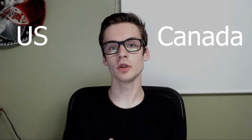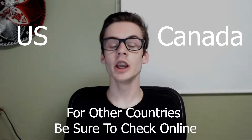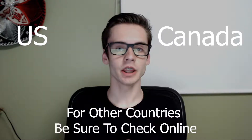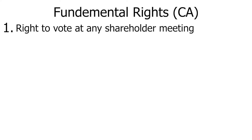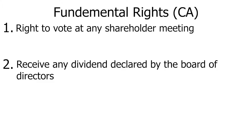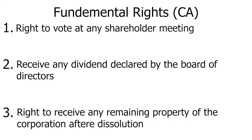Now I will be talking specifically about the fundamental shareholder rights in Canada and the US here. So if you happen to be in a different country, you can look it up online, though worldwide they tend to be more or less the same. In Canada, shareholders have three fundamental rights. First, you have the right to vote at any shareholder meeting. Second, you have the right to receive any dividend declared by the board of directors. And third, you have the right to receive any remaining property of the corporation after dissolution.